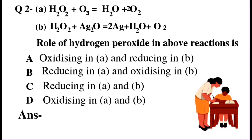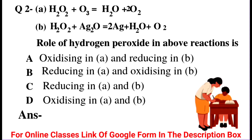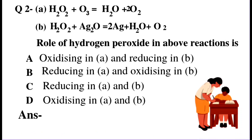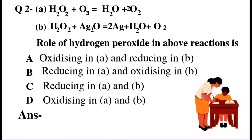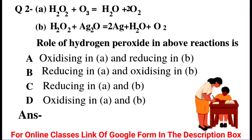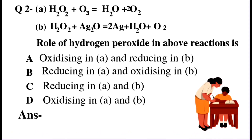Question number 2: we have two reactions. First: H2O2 plus O3 equals H2O plus 2O2. Second: H2O2 plus Ag2O equals 2Ag plus H2O plus O2. The role of hydrogen peroxide in the above reactions is — Option A: oxidizing in A and reducing in B. Option B: reducing in A and oxidizing in B. Option C: reducing in A and B. Option D: oxidizing in A and B.